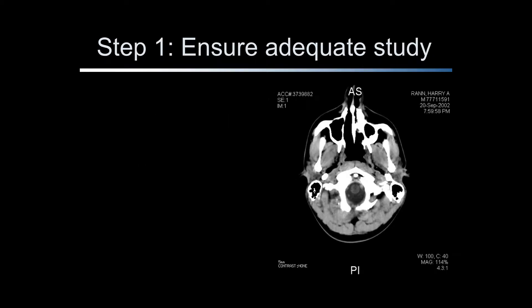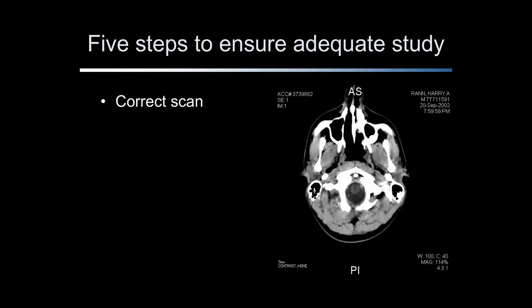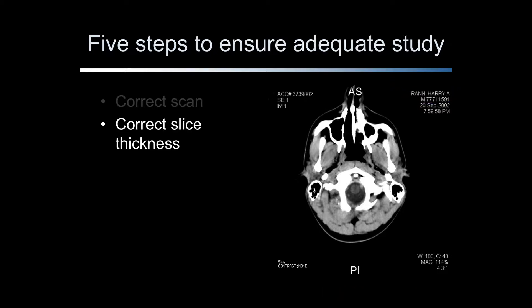Step one is to ensure the adequacy of the study. You must ask yourself: are you looking at the correct scan of your patient? Be extremely careful to make decisions on the correct patient information, especially in patients transferred from outside facilities. In adults, the slice thickness should be no greater than 5 millimeters below the tentorium and no greater than 10 millimeters above the tentorium. In children, the slice thickness should be no greater than 5 millimeters above and below the tentorium.